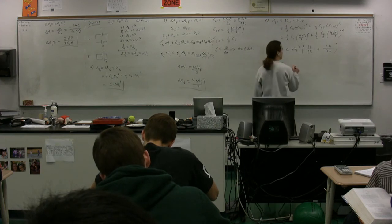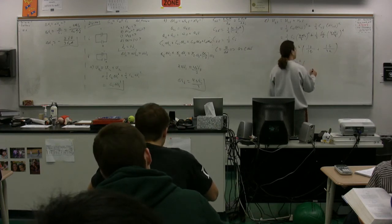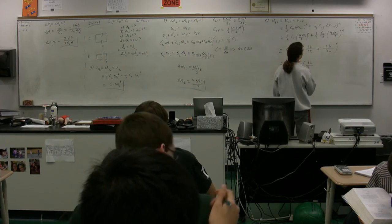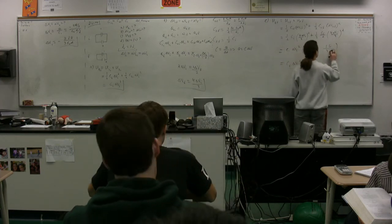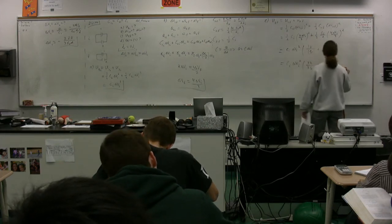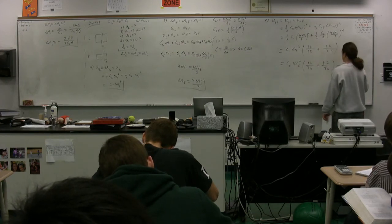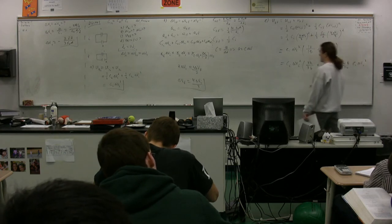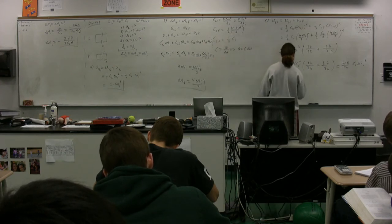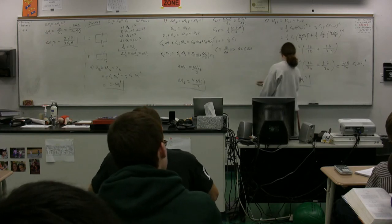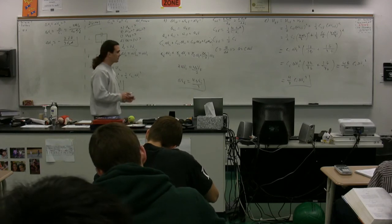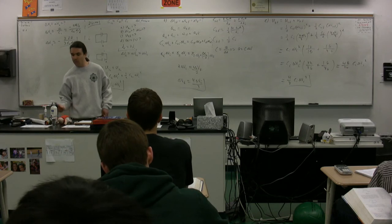Combining the fractions: we get 16 over 18 plus 16 over 36, which equals 32 over 36 plus 16 over 36, giving 48 over 36, which simplifies to four-thirds. So the total final energy equals four-thirds times C_initial times ΔV_initial squared. We end with more energy than we started with.